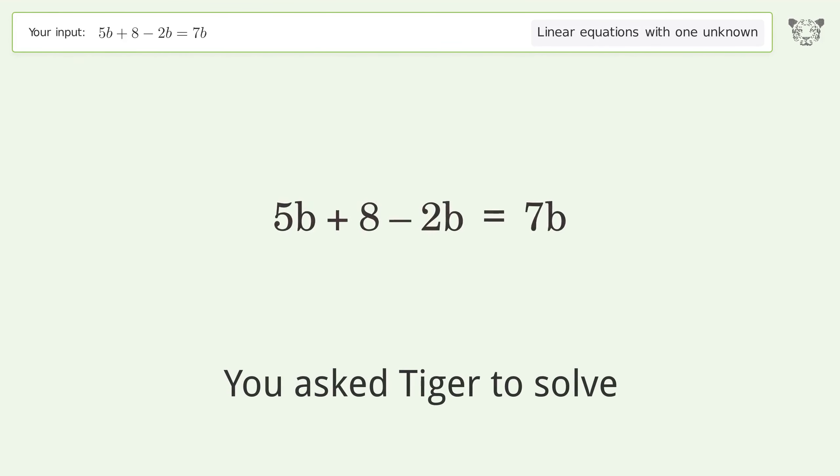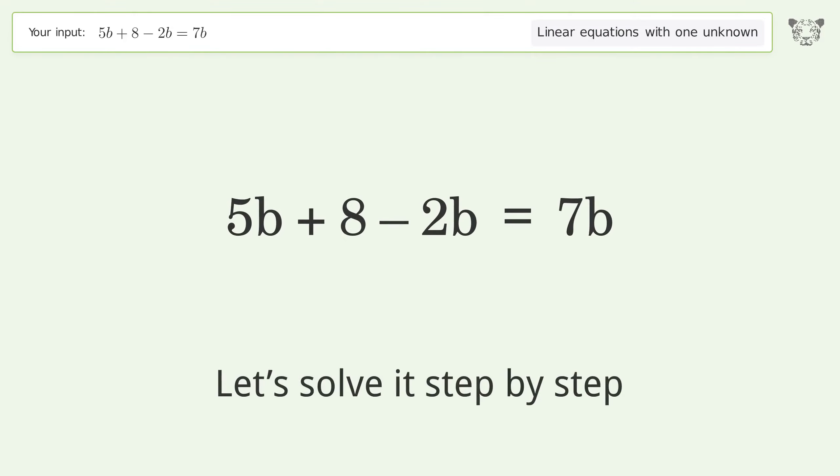You asked Tiger to solve. This deals with linear equations with one unknown. The final result is b equals 2. Let's solve it step by step.